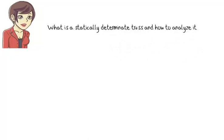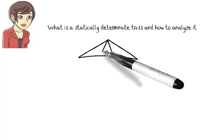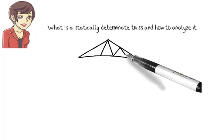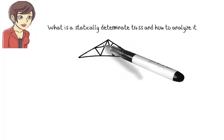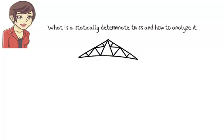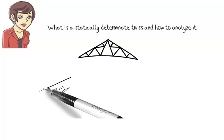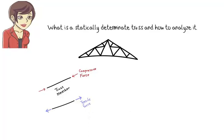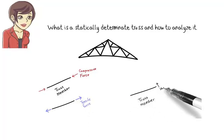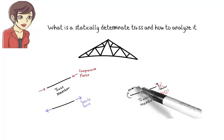A truss structure is an interconnected network of slender members, each capable of carrying an axial force only. The force is either compressive or tensile. Theoretically speaking, no shear force or bending moment is present in truss members.